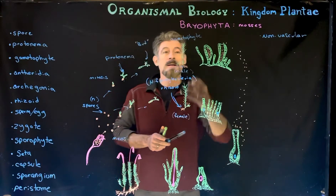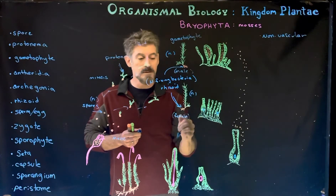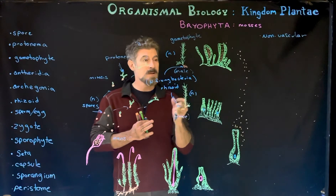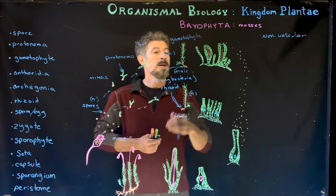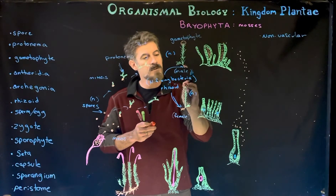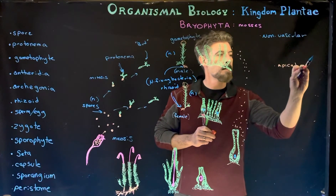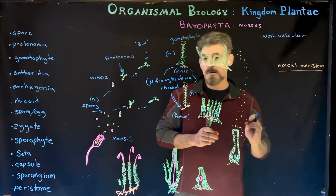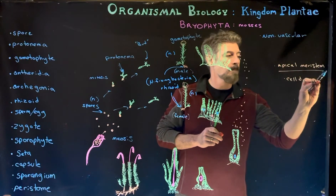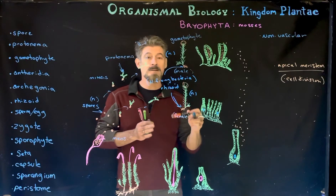The gametophyte plant is a macroscopic, multicellular organism whose cells are all haploid — one-n cells resulting from the spore. At the very tip of these structures is an apical meristem. An apical meristem is a site of rapid cell division and growth — a unique characteristic in plants, typically seen at the ends of roots and shoots.